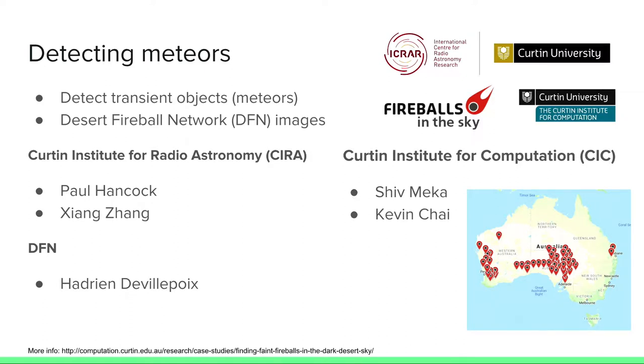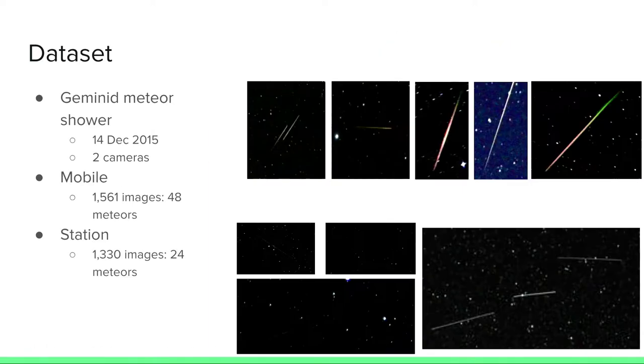This is a project we did with ICRA, the Curtin Branch, as well as the Desert Fireball Network. The idea is they have all these cameras in the Australian desert and not in the desert in some places, and they just watch the sky. They want to detect rare events which are these meteors, which they call fireballs. We were given a data set in 2015 only taken from two cameras. One was a mobile camera on the back of a ute. The other one was a stationary camera. And out of all those images, they detected about 70 meteors, which is not much for training a model.